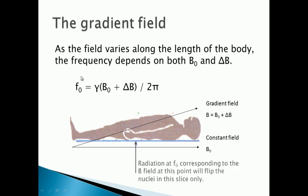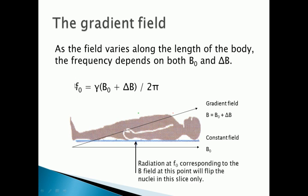The frequency that the protons are precessing at will depend on where in the body they are, because the magnetic field strength is varying across the body. When we apply a pulse of radio waves at a specific frequency F-naught — which is related to the magnetic field at a particular point in the body — only the protons at that particular slice will resonate, flip into the higher energy state, and start precessing. The others won't pick up the energy because they're not being driven at their natural frequency, so they don't resonate. Only those protons resonate, meaning you only get a signal from that particular part of the body.